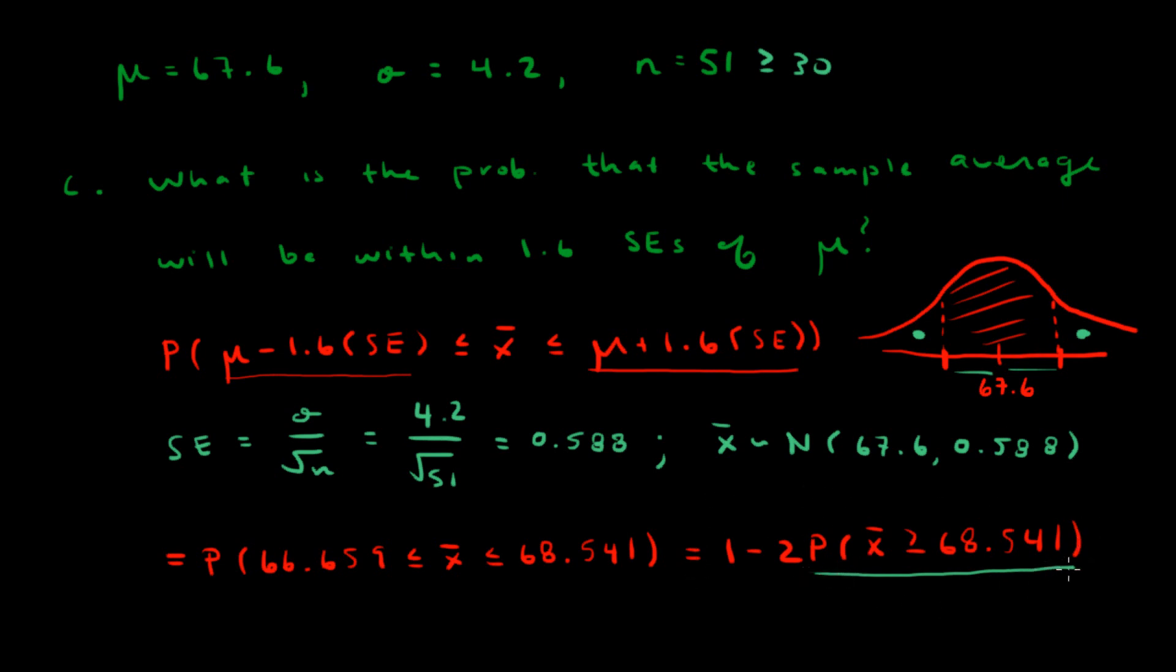You can find this probability using the normal calculator. There's your mean, there's your standard error. Use greater than as the inequality and then plug in 68.541.